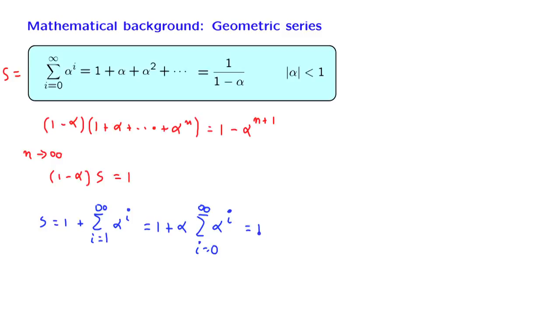Now, this is just 1 plus alpha times s, because here we have the infinite geometric series. Therefore, if we subtract alpha s from both sides of this equality, we get s times 1 minus alpha equal to 1.